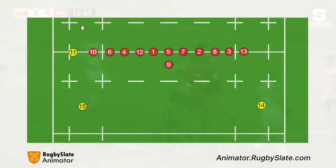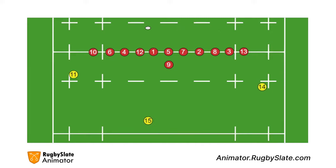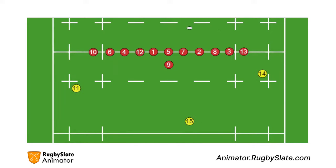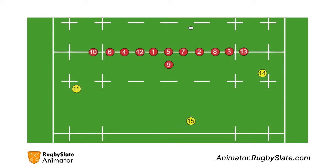The main principle is that when the ball moves across the field, the back three adjusts their positioning, as shown here. The 15 tracks across the field, almost shadowing the ball, while the wingers come up to join the defensive line when the ball is on their side, and fall back when it's on the far side.